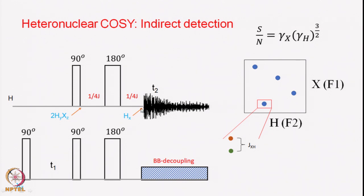So at this point the only operator term will be HX, and you do not have anything from the antiphase components. Once it is in-phase HX, you can apply broadband decoupling across the entire spectral width. All the X nuclei will be decoupled while you are detecting the proton, so every proton-X nucleus coupling will be removed. Therefore, along the F2 axis the coupling has been removed. However, it still remains along the F1 axis because during T1 we did nothing to remove the coupling evolution — the coupling splitting still appears in the F1 dimension.